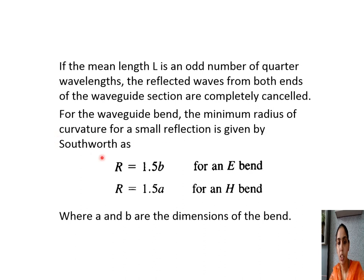According to Southworth, the radius of curvature R = 1.5b for an E-bend and R = 1.5a for an H-bend, where a and b are the dimensions of the waveguide. In this section we have seen the hybrid ring, the nature of the rat race junction, derivation of the S-matrix for a hybrid ring, and flexible waveguides such as bends, twists, and corners used for changing the direction or polarization of a traveling wave.